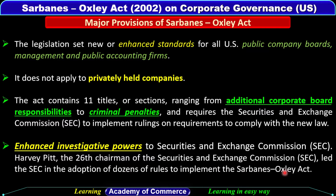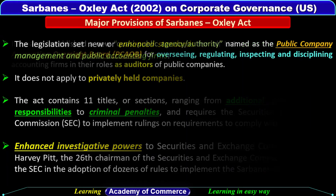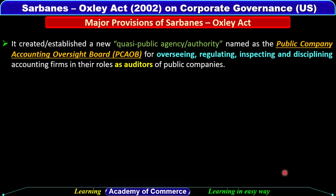Harvey Pitt, who was the Securities and Exchange Commission's 26th Chairman, led the SEC in implementing the Sarbanes-Oxley Act. The SEC also created a new quasi-public agency authority named the Public Company Accounting Oversight Board (PCAOB) for overseeing, regulating, inspecting, and disciplining accounting firms in their roles as auditors of public companies.